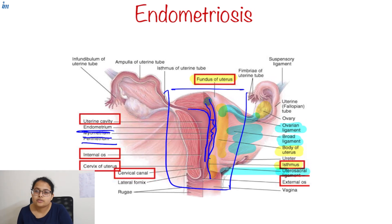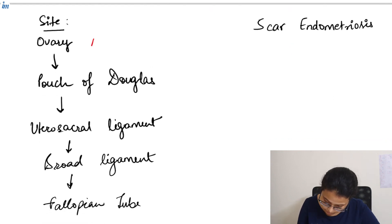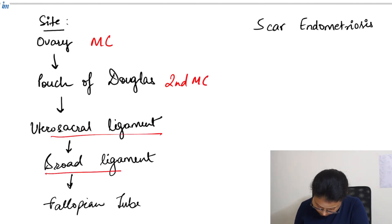Now, in endometriosis, this endometrial tissue is present outside the uterine cavity. It could be present anywhere. But the most common site is ovary, followed by pouch of Douglas, which is the second most common site, followed by uterosacral ligament, then broad ligament, and last one is the fallopian tube.